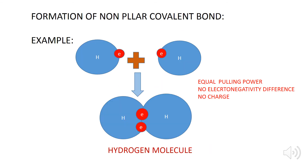Let's take an example of the hydrogen molecule H₂. Hydrogen has the electronic configuration 1s¹, meaning it has one electron in its valence shell. These two hydrogen atoms have no electronegativity difference, so electrons are equally shared between them and a non-polar covalent bond is formed.